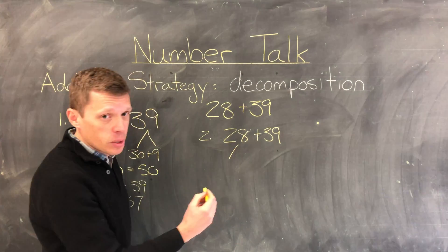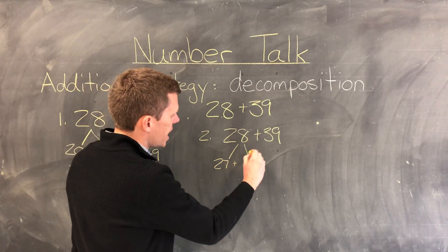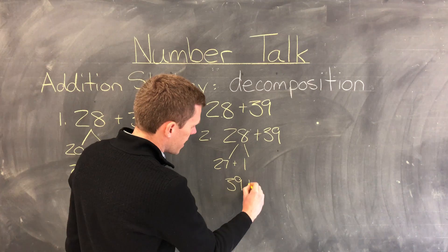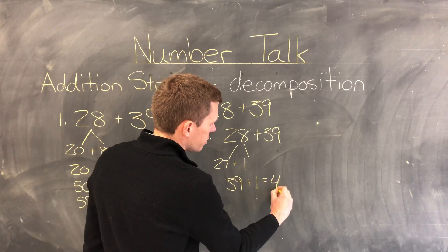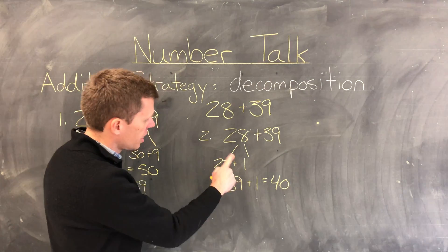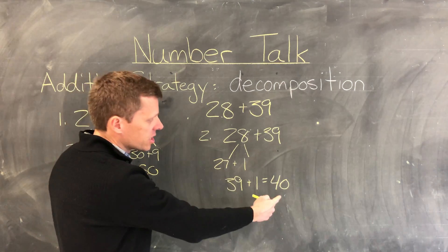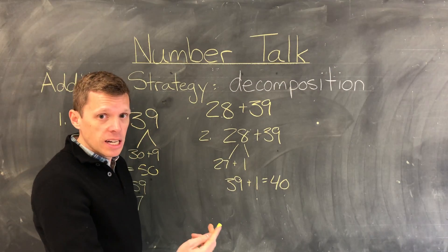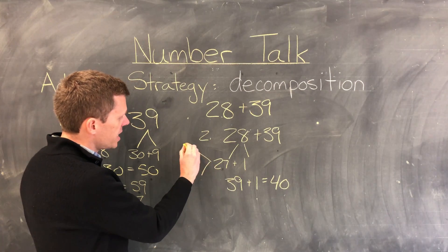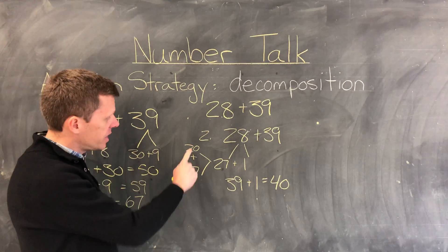I'll decompose 28 into 27 plus 1. So if I have 39 and I add 1, I get to 40, and 40 is a friendly number that I can work with a lot easier. I still have this 27 though, and that might be more difficult to add to 40. So I could decompose 27 even further into 20 plus 7.